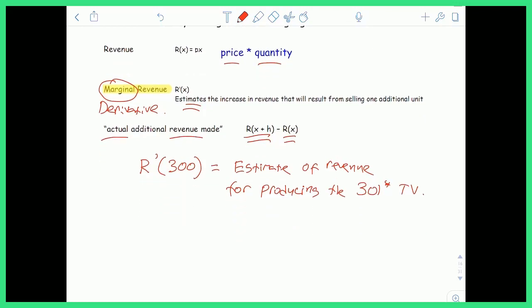Again, however, you can find the actual revenue for producing the 301st TV is just equal to the revenue for producing 301 TVs minus the revenue you got for producing the first 300. So you can actually calculate the answer. So just know the difference between the two is that a marginal revenue is an estimation. It's not an actual value.